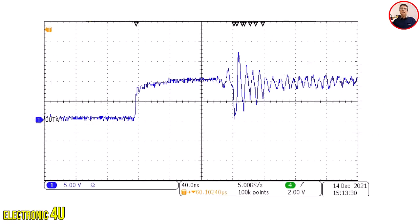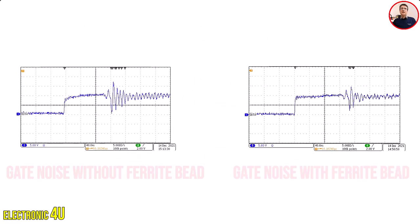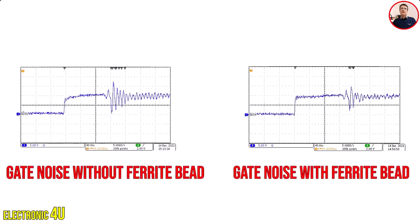This waveform shows a noisy superjunction MOSFET switching without a ferrite bead in the picture, and with a ferrite bead between the gate and the output in the next picture. Adding the ferrite bead significantly reduces the magnitude of gate oscillations in this picture.